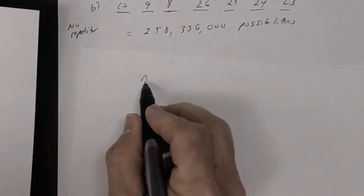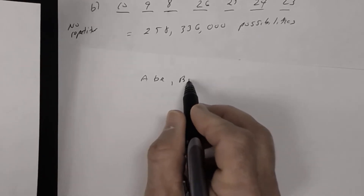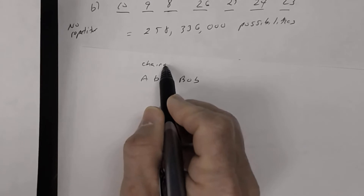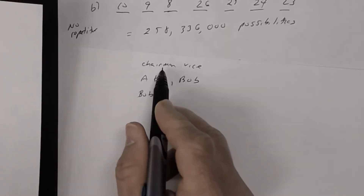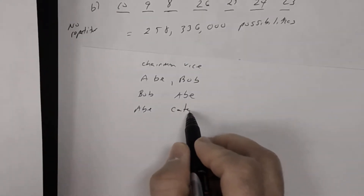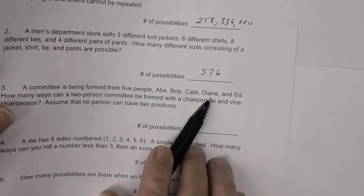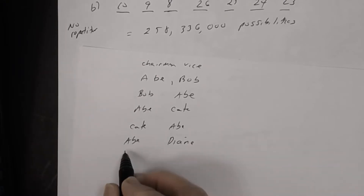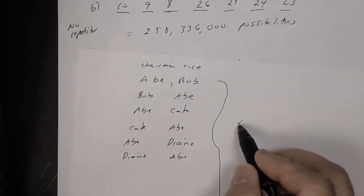This makes sense when you think about it: Abe can be chairman and Bob vice chairman, or Bob can be chairman and Abe vice chairman. Or Abe can be chairman and Kate vice chairman, or Kate chairman and Abe vice chairman. Altogether there should be 20 of these combinations.